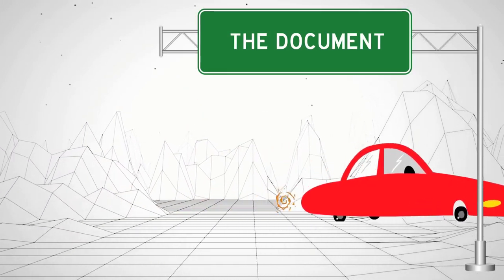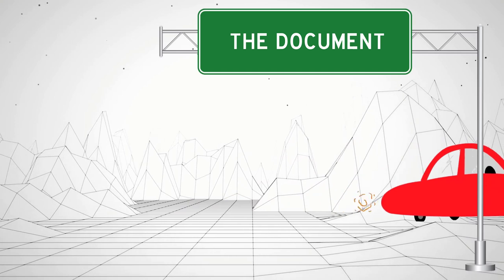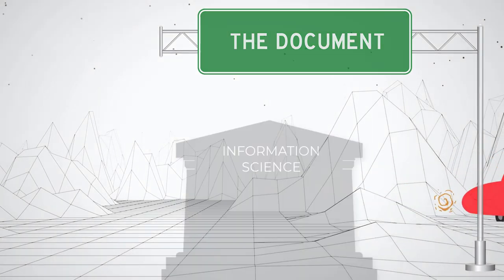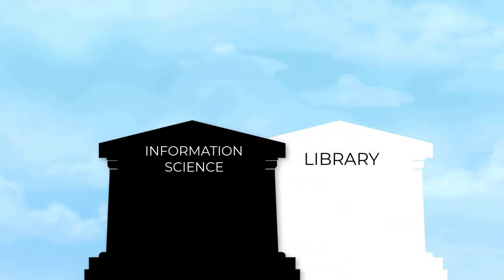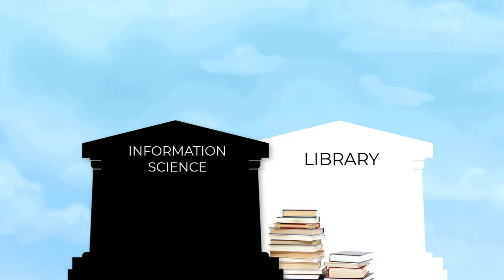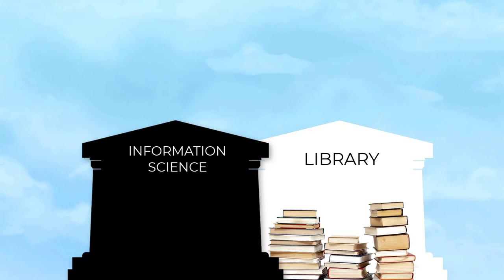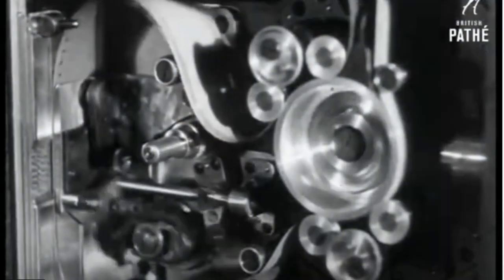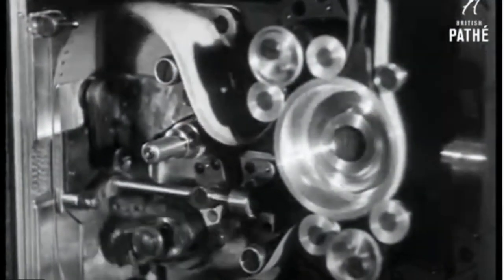First stop: the document. In the mid to late 1800s, an event occurred that set off information science from the related enterprise of libraries, which traditionally collect books. This event was an information explosion of documents.